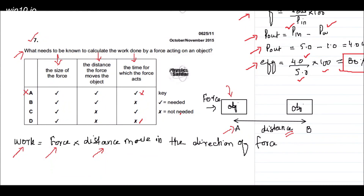Option A includes time as needed — not correct. Option B: time is not needed — that could be our answer. Option C: time is needed — not correct. Option D: time not needed — also could be correct. Comparing B and D: option B requires the size of force and the distance moved by the object, with time not needed — all correct. Option B is the correct answer.